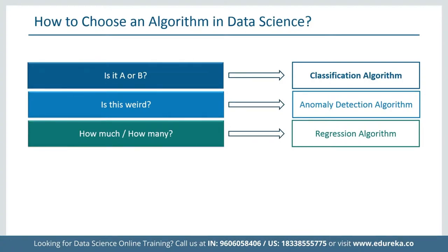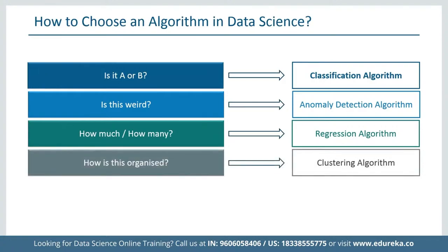Next, 'How is this organized?' Say you have some data — how will you make sense out of it? You can solve it using clustering algorithms. Clustering algorithms group the data in terms of common characteristics. For example, if you have a bunch of gems and you organize them by color, you have got yourself a bunch of clusters. Similarly, clustering algorithms try to find what is common between data points and cluster them together.